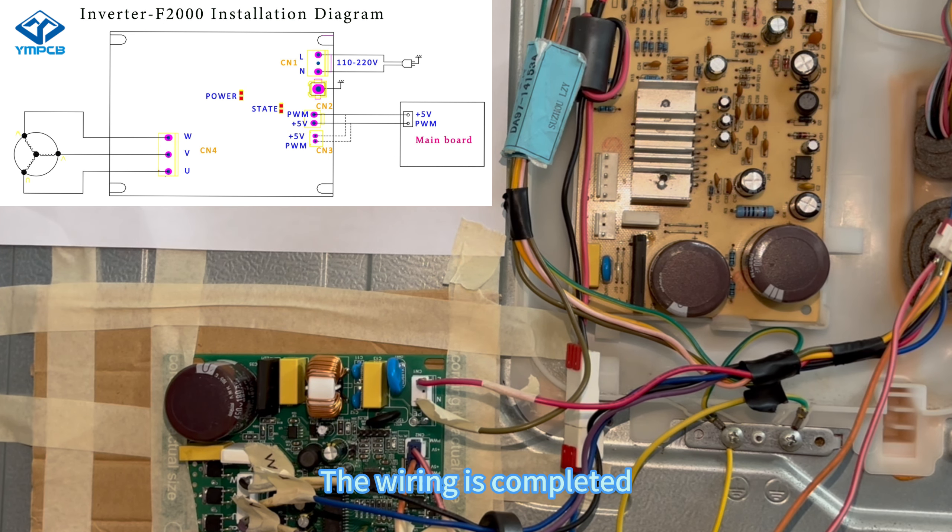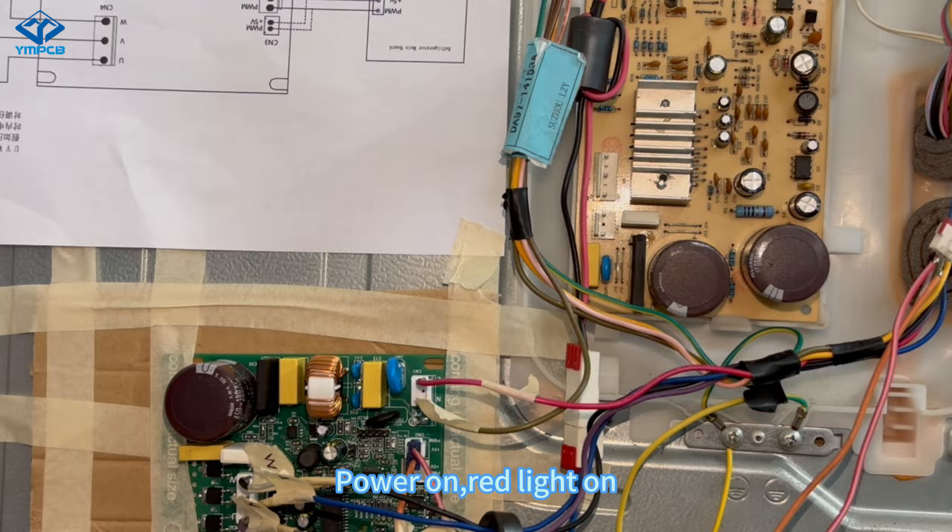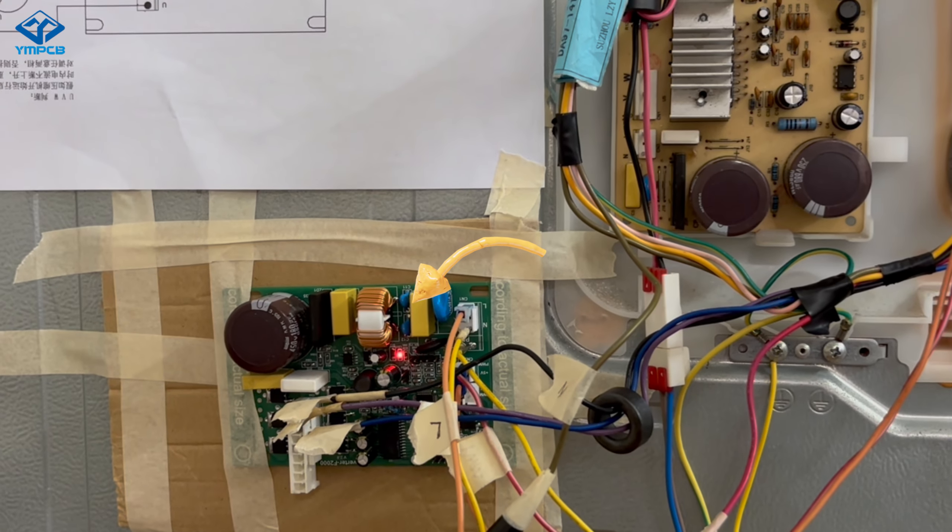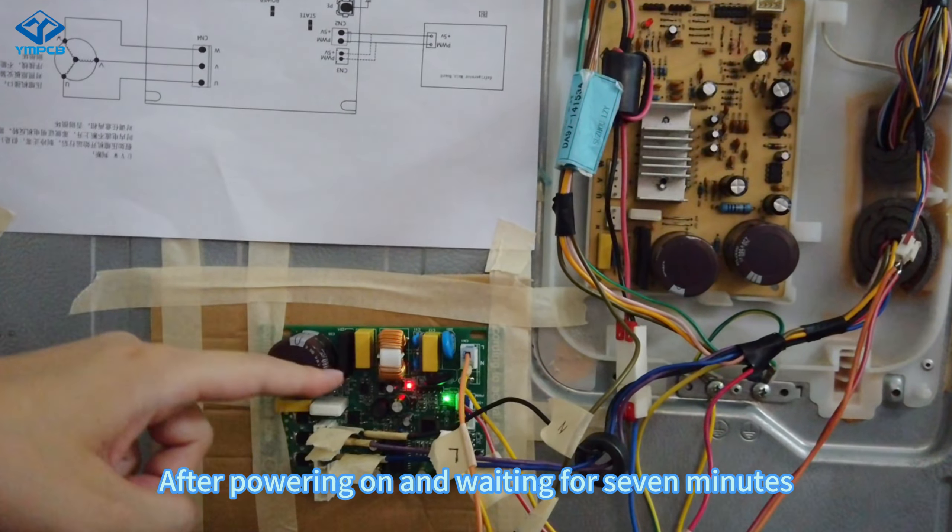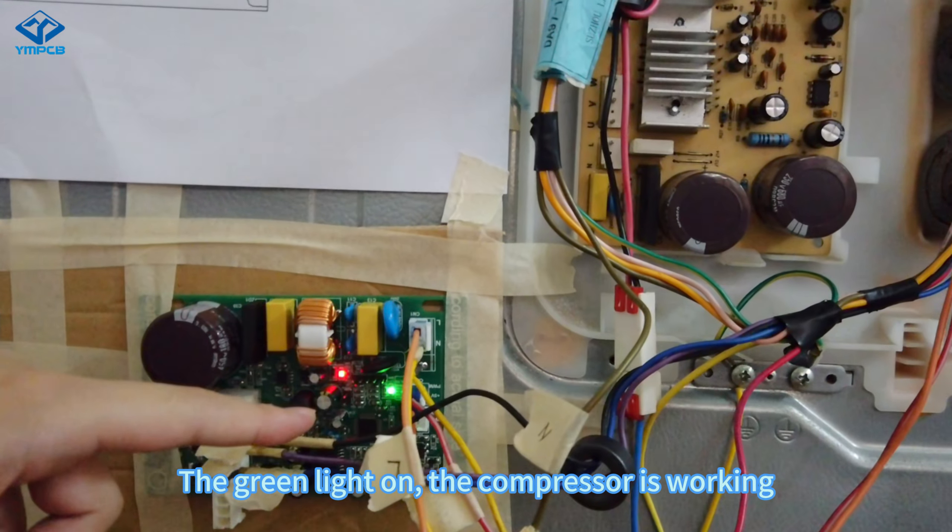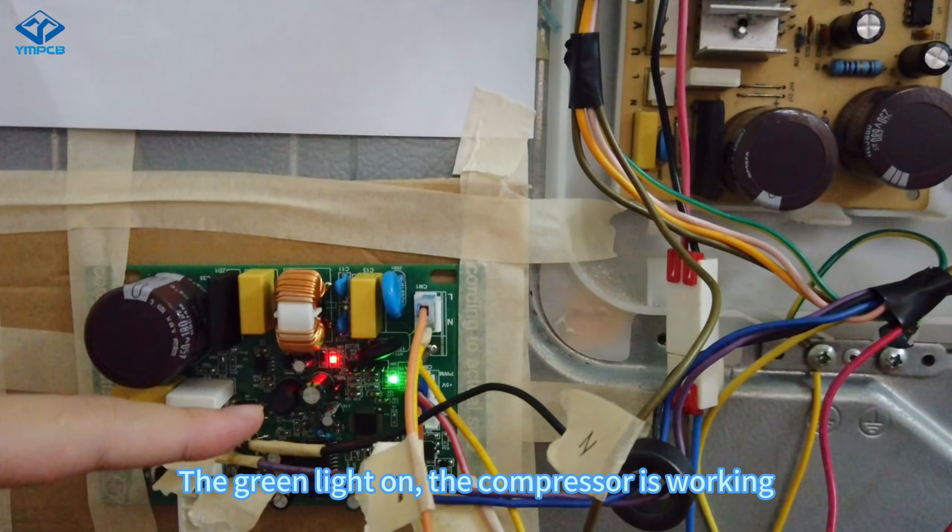The wiring is completed. Power on, red light on. After powering on and waiting for 7 minutes, the green light turns on and the compressor is working.